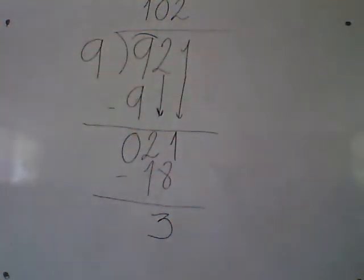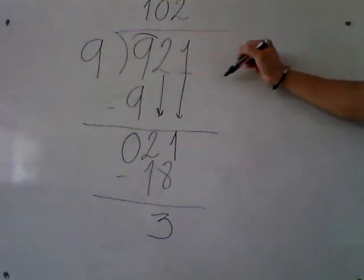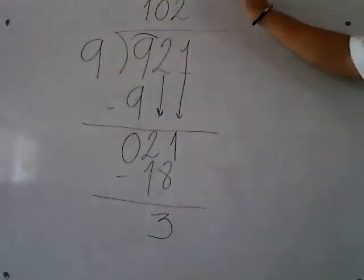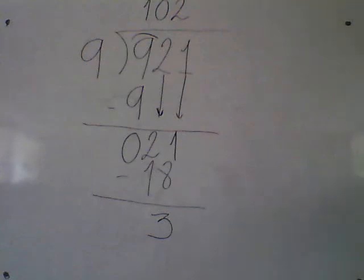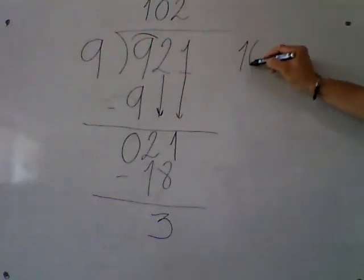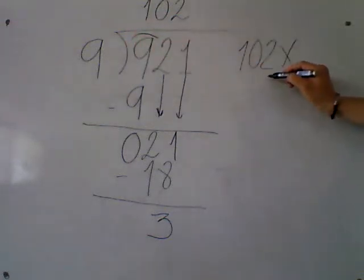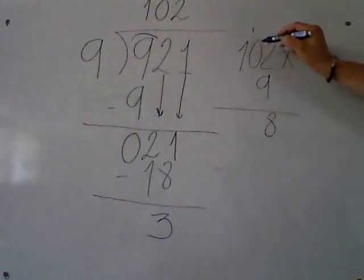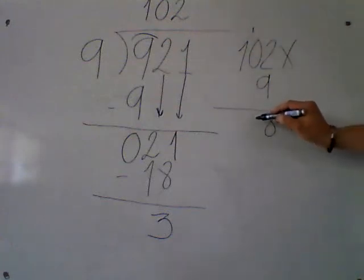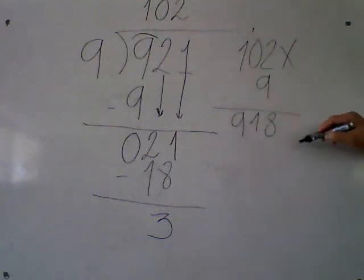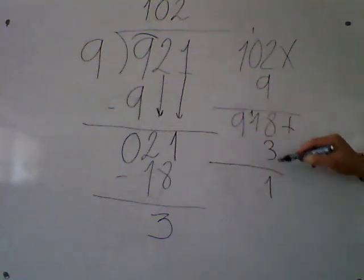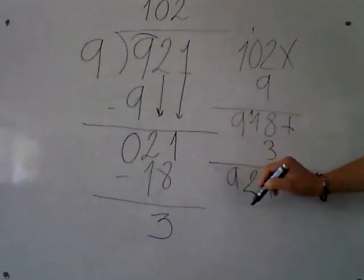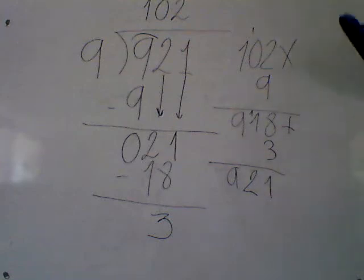Does 9 fit in 3? No. Do you have more numbers to bring down? No. So this is the answer. Remember we could continue with decimals, but right now we are working only with whole numbers. The answer is 102. Remember to check: quotient times divisor. 9 times 2 is 18, carry 1. 9 times 0 is 0, plus 1 is 1. And 9 times 1 is 9. So my division is correct.